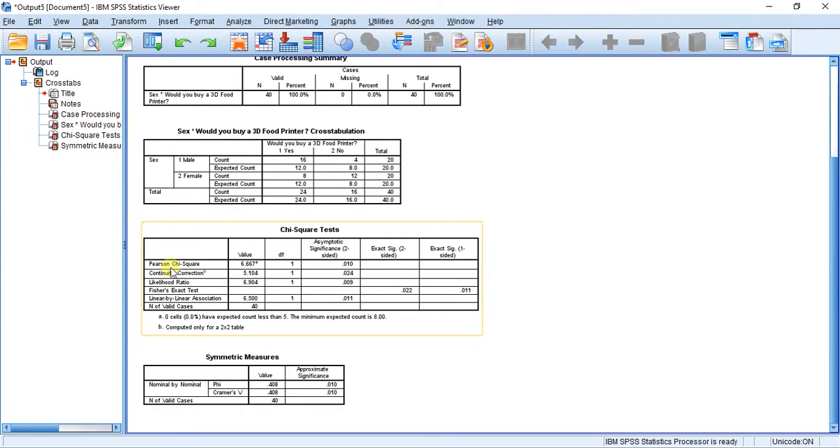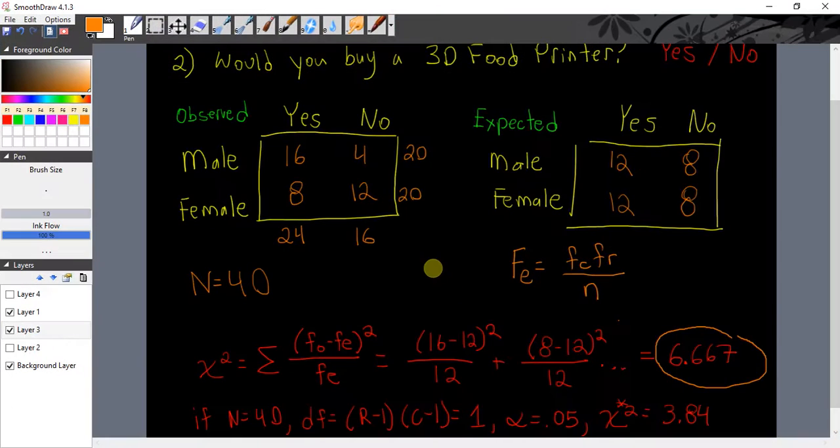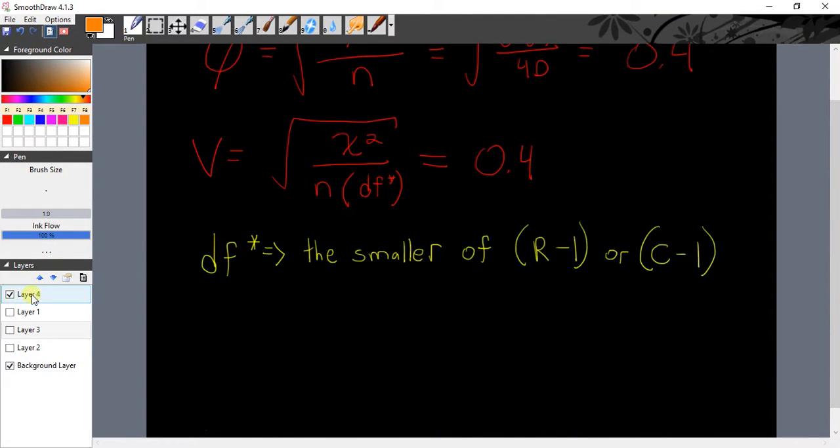And down here we have my Pearson chi-square value of 6.667. That's exactly what we calculated. And it gives us our significance of 0.01. So it's very significant. That's less than 0.05 and that was our cutoff value for significance. And down here you can see our measure of effect size. In this case we're doing phi because we have a 2 by 2 table and the value is 0.408. So it's very significant and it has about a medium to strong effect size. So there's a medium to strong relationship between gender and purchase intent for 3D food printers.